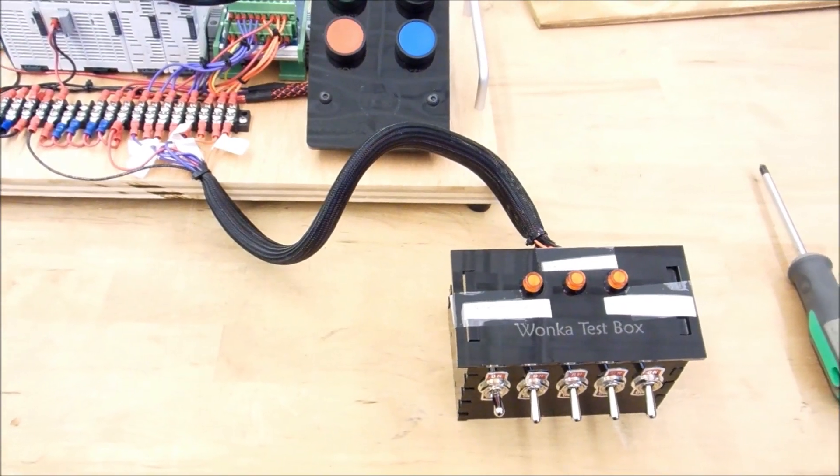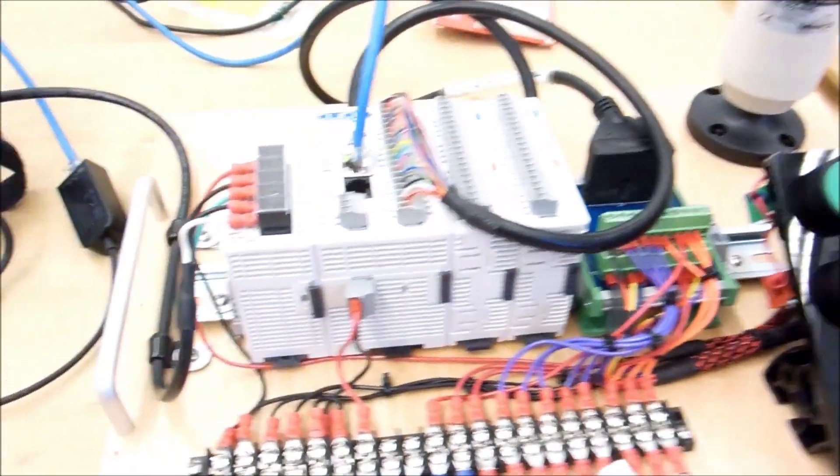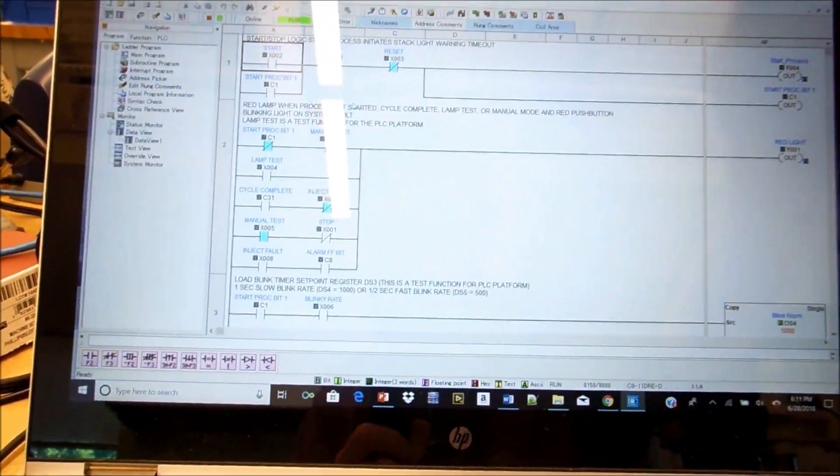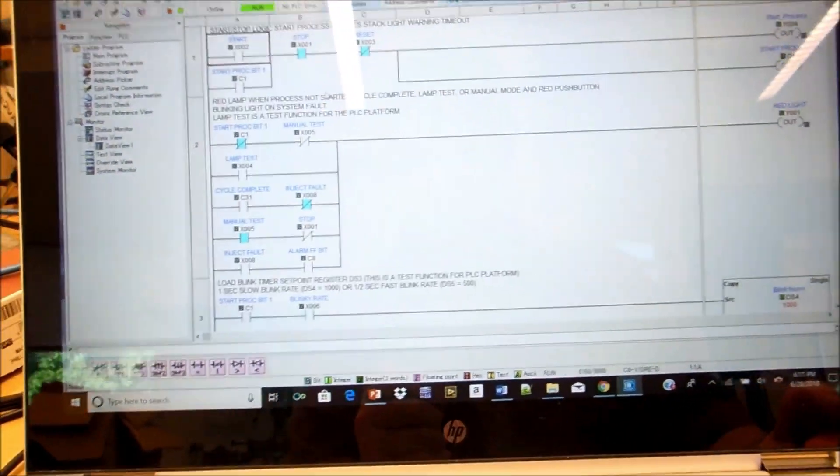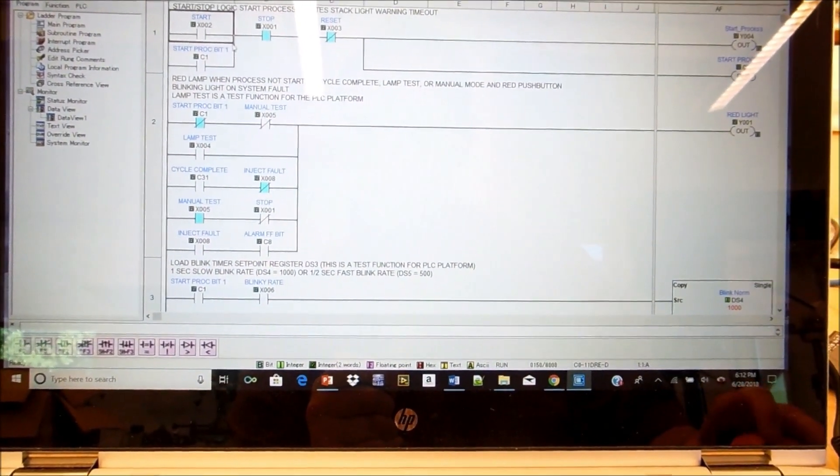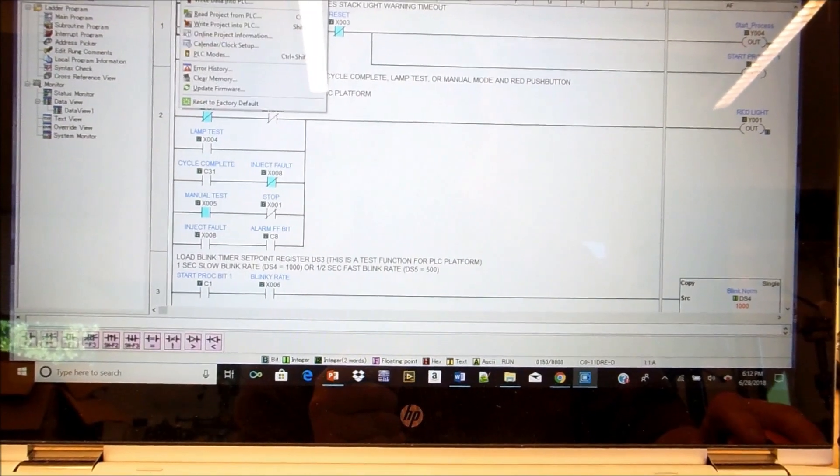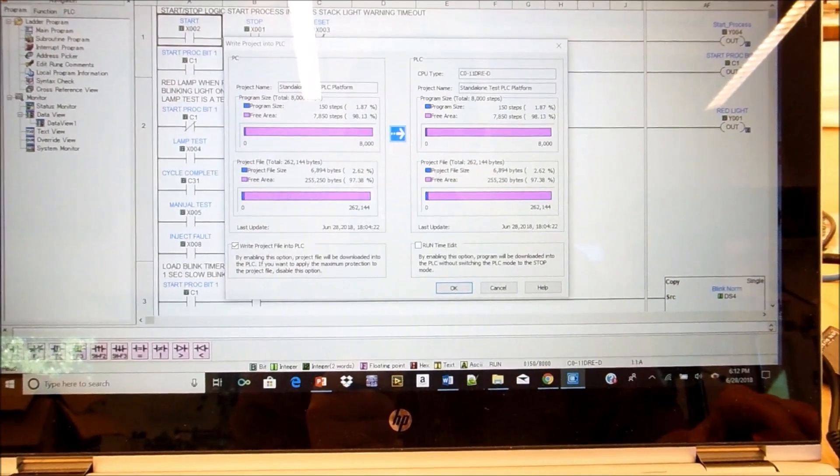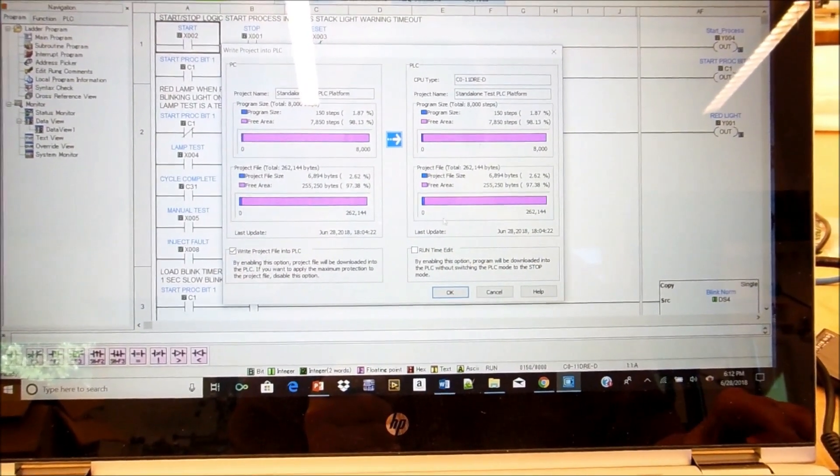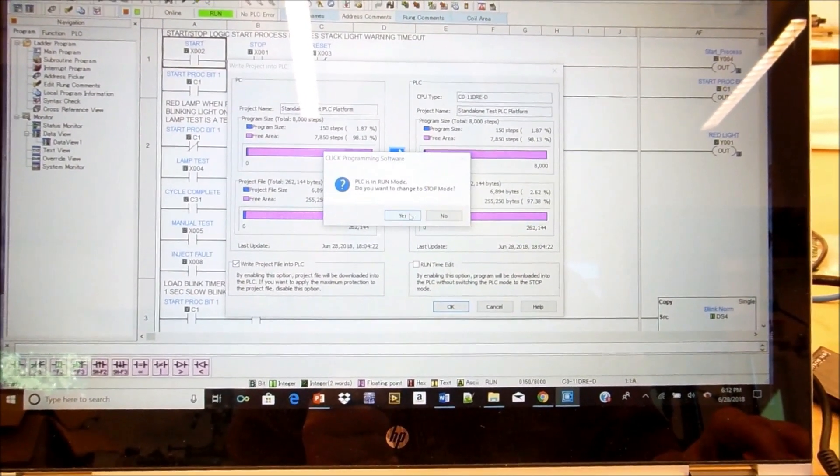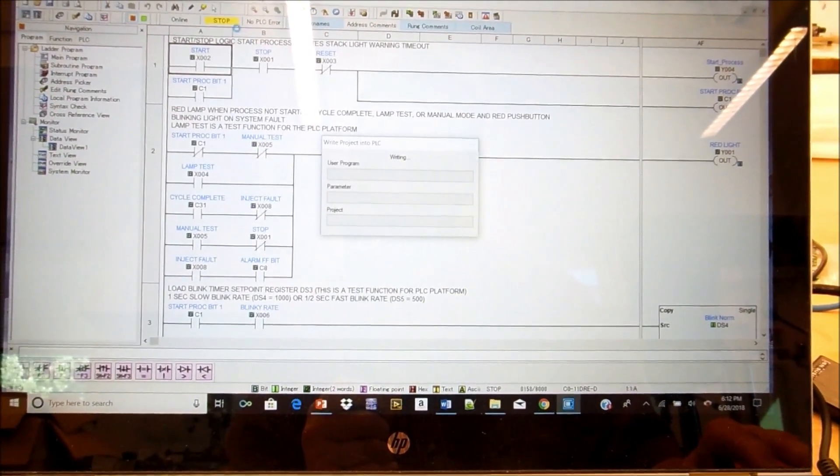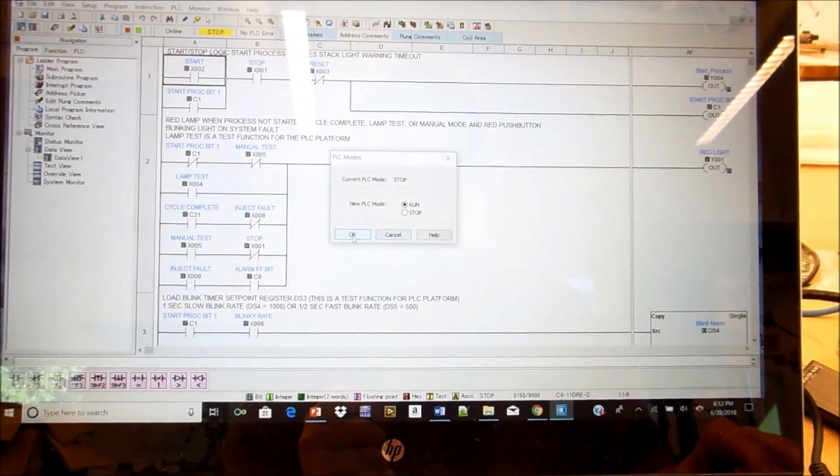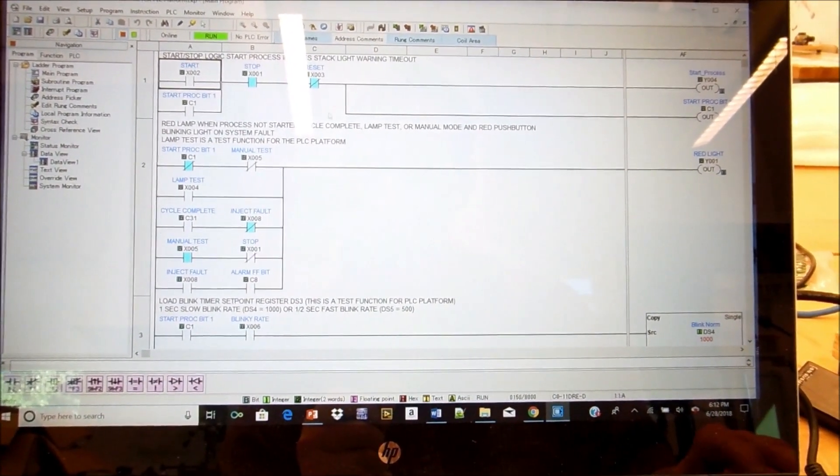Okay, so now we've got the Wonka box hooked up, and what we're going to do is we're going to download the program. Now this is a standalone, and you can't see it very well because of my glossy screen, but we've got a program running, and this is a standalone program. And if we're going to download it, we can just write the project into the PLC. It comes up with some screens about what you're trying to load and what you're trying to put it into, and all you do is just click on it, change from run to stop. You can see we're in stop mode while it loads, and when it's done, it'll say go back to run mode. Yep, and now we're in run mode. We can monitor this.